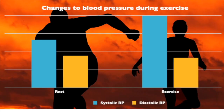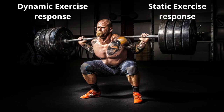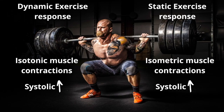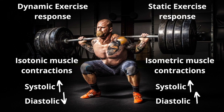As we exercise we experience changes to our blood pressure. If the exam question just says 'exercise,' we tend to think of dynamic exercise, so your systolic blood pressure will increase and your diastolic blood pressure will stay the same or slightly decrease. Dynamic exercise is where a muscle contracts and the opposite relaxes — a run or a press-up are dynamic examples, and it's an isotonic muscle contraction. Static exercise, such as holding a weight out to the side in a T-shape or a plank, is an isometric contraction. In both cases systolic blood pressure increases, but diastolic differs: in dynamic it goes down or stays the same, while in static it increases.